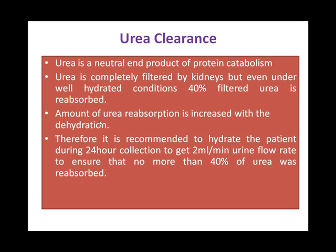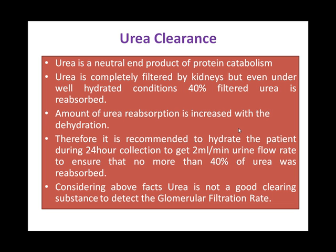Therefore, it is recommended to hydrate the patient during the 24-hour urine collection to get a urine flow rate of 2 ml per minute, to ensure that no more than 40% of urea is reabsorbed. This means a minimum total output for 24 hours is 2880 ml, nearly 3 liters of urine. To achieve this, you must hydrate the patient with at least double the volume of liquid. Considering these facts, urea is not a good clearance substance to detect the glomerular filtration rate.